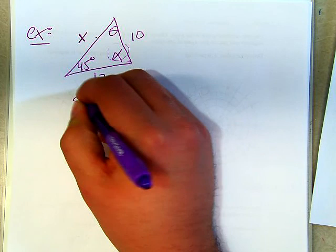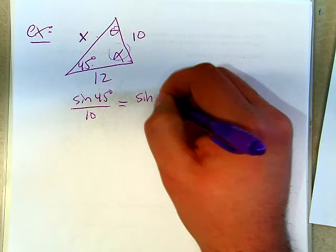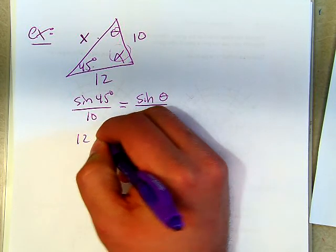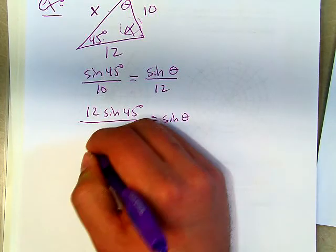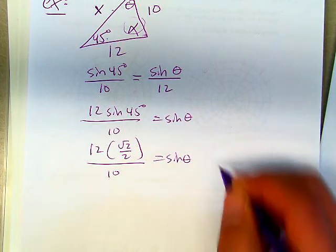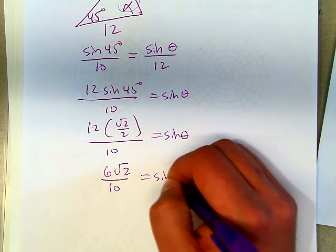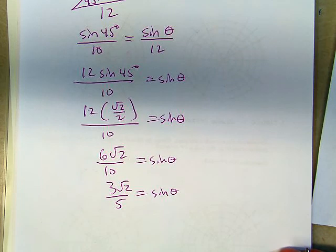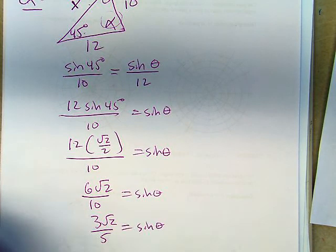Let's see, I know that sine 45 degrees, if I divide that by 10, that's going to be sine of theta over 12. If I multiply by 12 to get rid of the denominator on the right, I can clean this up a little bit. Sine 45 is root 2 over 2. 12 divided by 2 is 6, so that's 6 root 2 over 10. So then we get 3 root 2 over 5 equals sine theta if we reduce it.